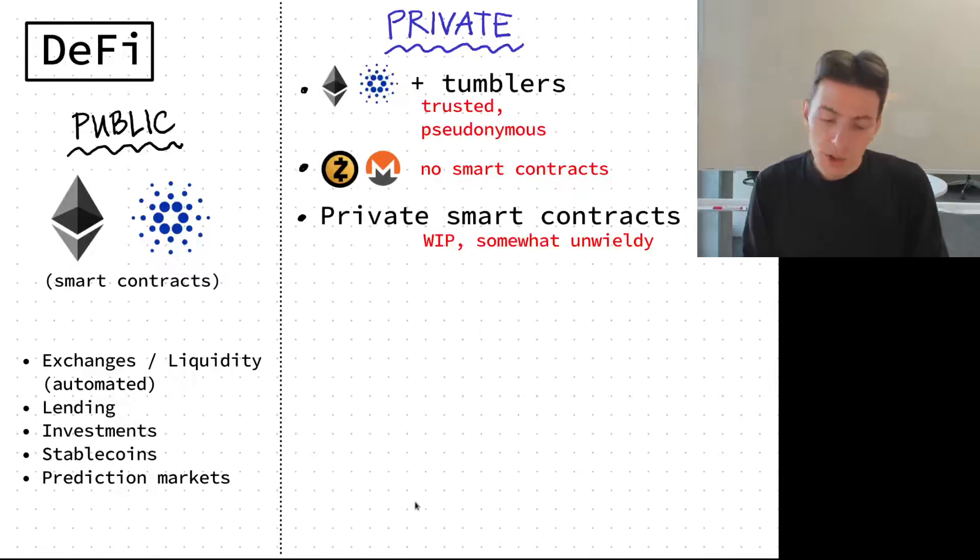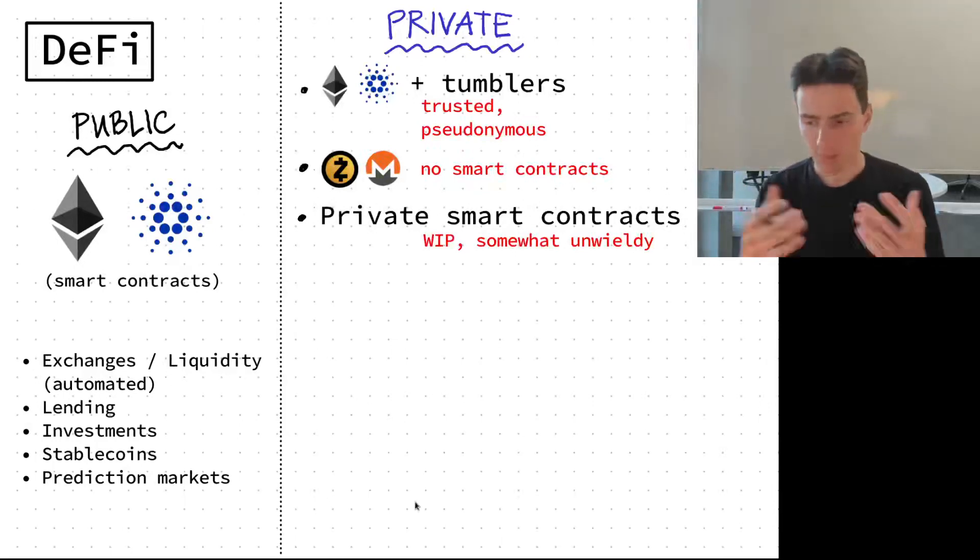If you want to add smart contracts on private chains such as Zcash or Monero, it is quite challenging. Private smart contracts are theoretically possible, even practically possible, but still not being implemented on any big scale because of many practical problems with their implementation.